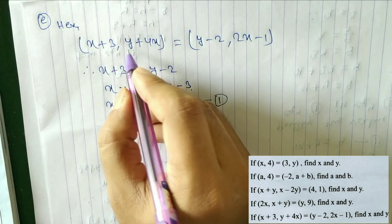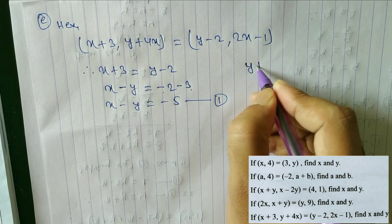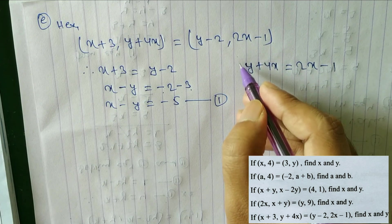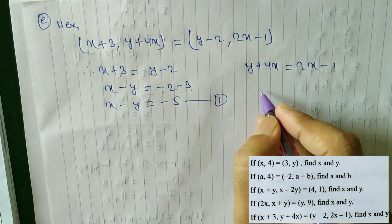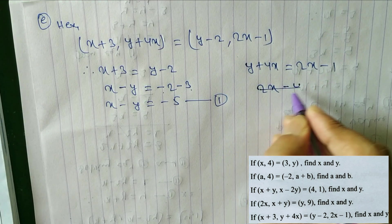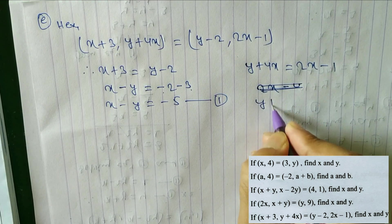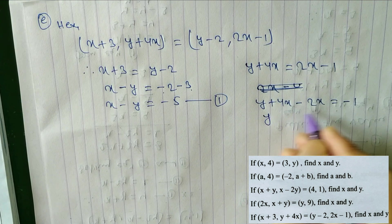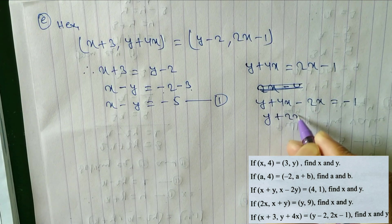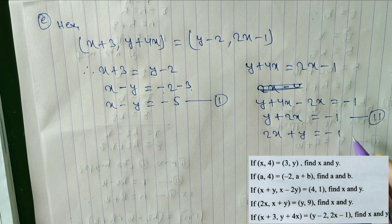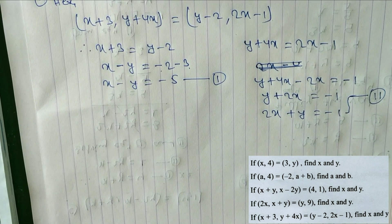From the y components: y plus 4x is equal to 2x minus 1. Rearranging: y plus 4x minus 2x is equal to minus 1, so 2x plus y is equal to minus 1 — equation 2.